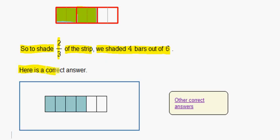So here is a correct answer. We shaded one, two, three, four out of six bars, which is the same as two out of three. So that is two-thirds.